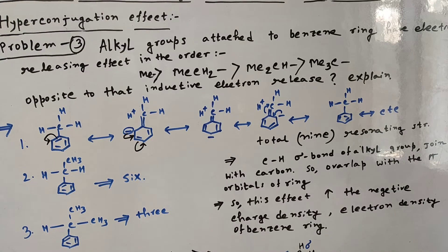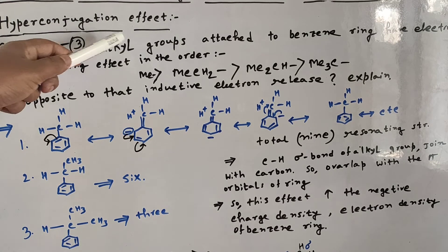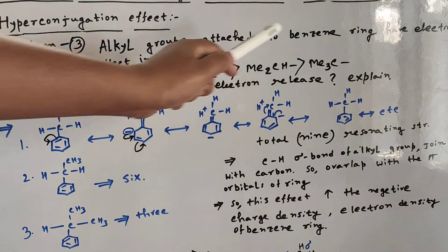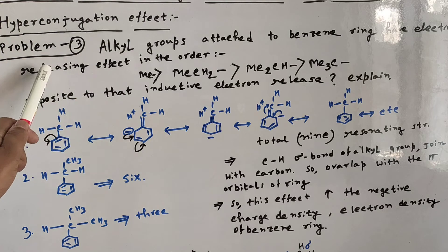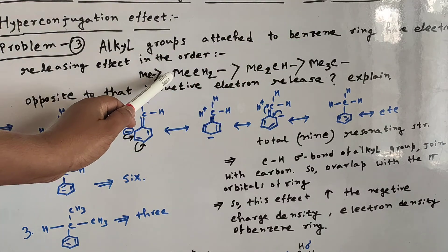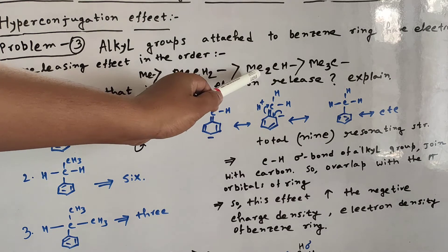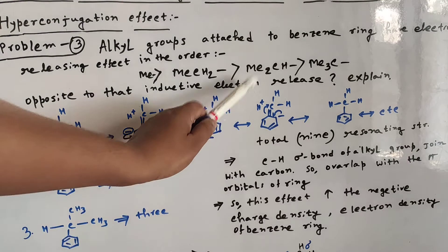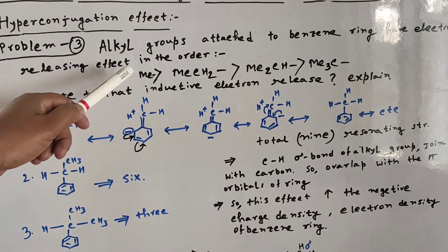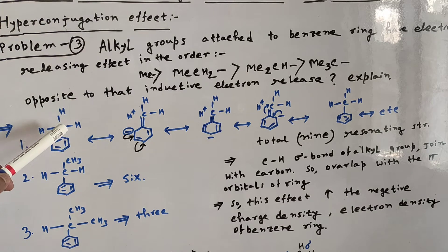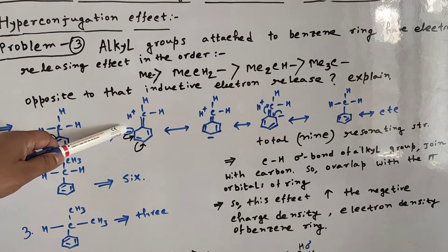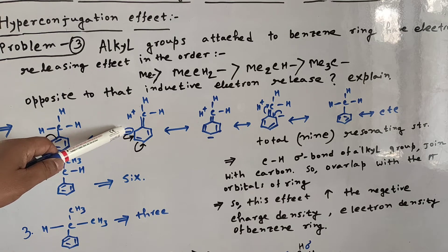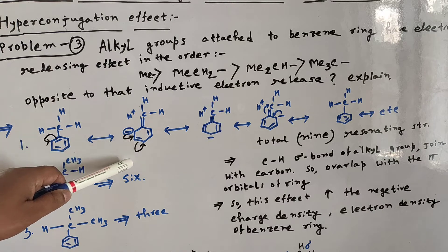This is a very important example. When an alkyl group is attached to a benzene ring, the electron-releasing effect order is: methyl (CH₃) > ethyl (CH₂CH₃) > isopropyl ((CH₃)₂CH) > tert-butyl ((CH₃)₃C). This is opposite to the inductive effect order. When a methyl group is attached to benzene and hydrogen takes part in hyperconjugation, a negative charge forms and delocalizes to the para position.